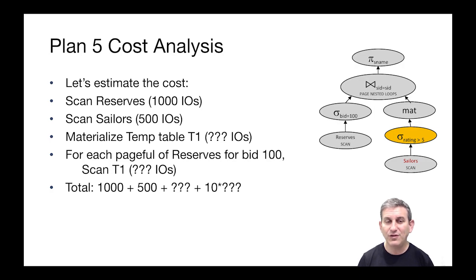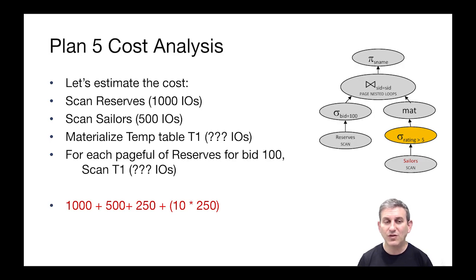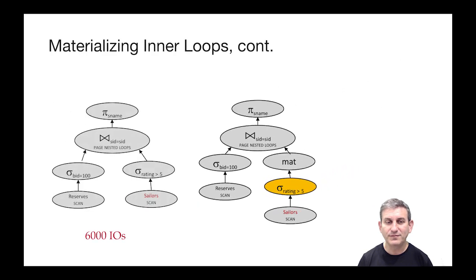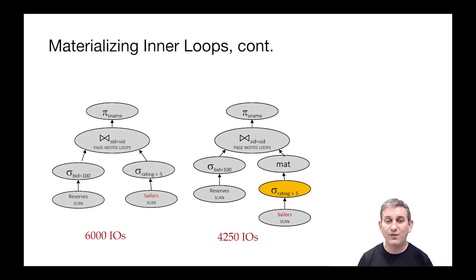For each pageful of Reserves, we're going to scan that resulting materialized operator, which is 250 big. The total cost is a thousand plus 500 to scan Sailors, plus 250 to write the materialized table, plus—and here's the loop part—10 times scanning through the materialized result of 250. Adding that all up, we get a total cost of 4,250 IOs. We actually did save ourselves a little bit of cost by doing this materialization.